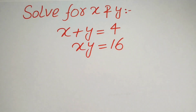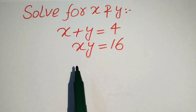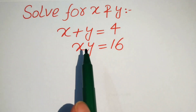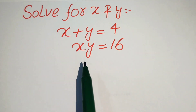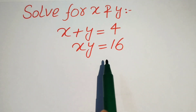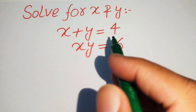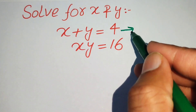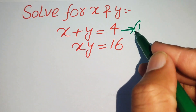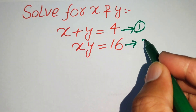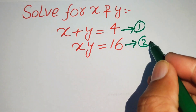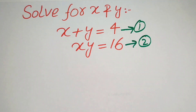Hello everyone, welcome. We solve this math olympiad algebra problem. We have x plus y equals 4 — this is equation number one — and xy equals 16 — this is equation number two.